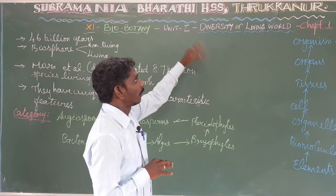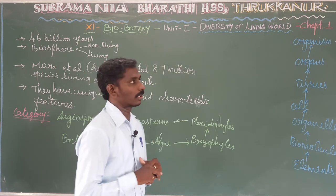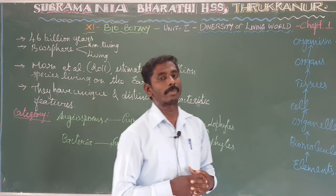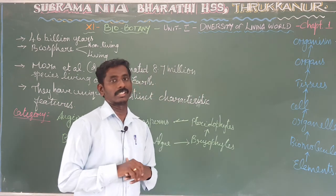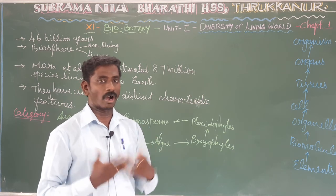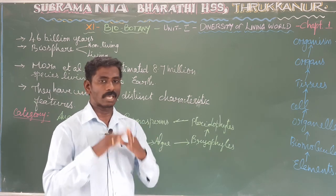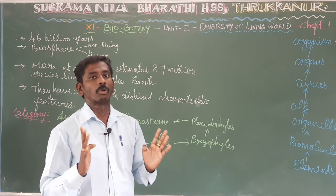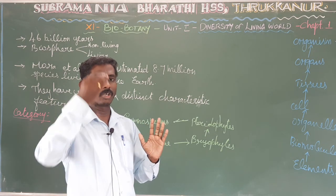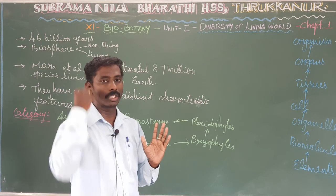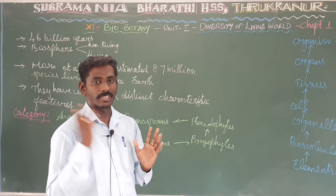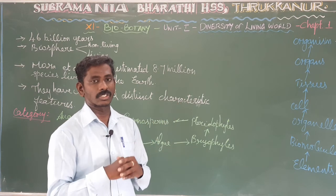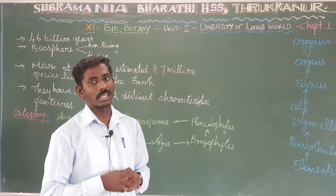In the Diversity of Living World, we have two chapters. The first chapter is the Living World. We are going to study organisms — organisms have morphological and functional features. One organism has a peculiar morphological character and unique physiological function. All of these are studied in biodiversity.